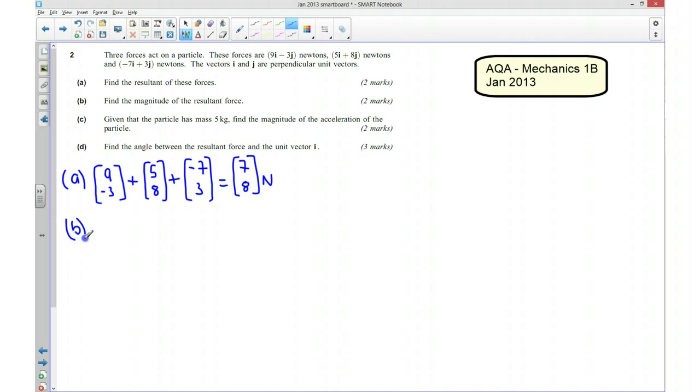Part B. We need to find the magnitude of the resultant force. So we can use Pythagoras to work out what the magnitude of this vector is. So I'm going to say that it's going to be the square root of 113. And if I put that into my calculator, that gives me 10.6 Newtons to 3 significant figures.